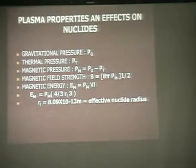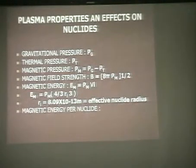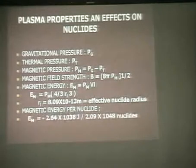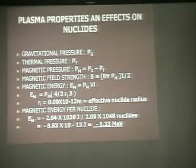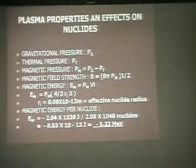The effective nuclei radius is very small — 10 to the minus 13 meters. From that equation, the magnetic energy per nucleus is calculated in joules, then converted to MeV, giving about 5.355 MeV for each individual particle. Now, if you have enough energy at each individual particle, will it affect the decay rate? Absolutely — it's going to affect the decay rate phenomenally.